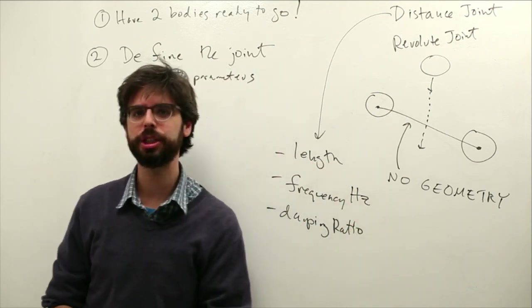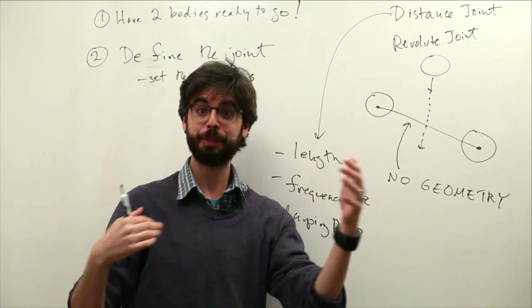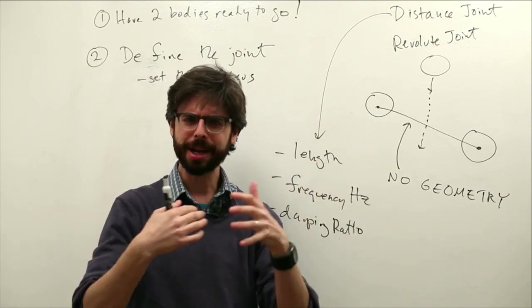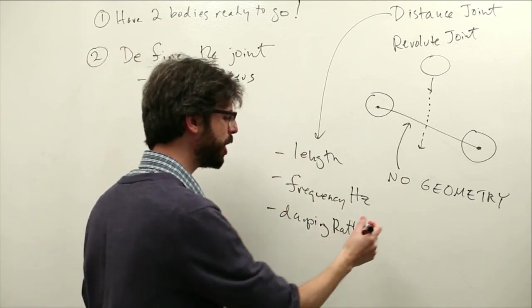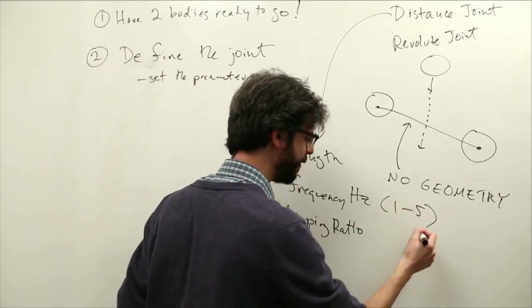So frequency Hertz you can think of as the speed of oscillation, the harmonic, the simple harmonic motion. What is the frequency of that oscillation? And typically these are numbers between one and five.